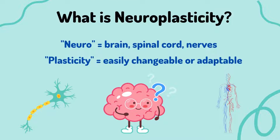What is neuroplasticity? Neuro means the nervous system, which includes the brain, spinal cord, and nerves. Plasticity means easily changeable, adaptable, or modifiable.